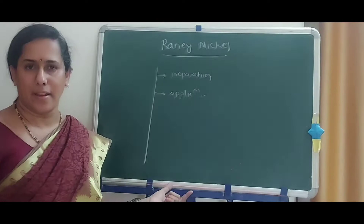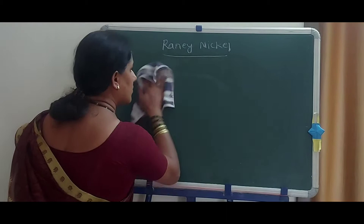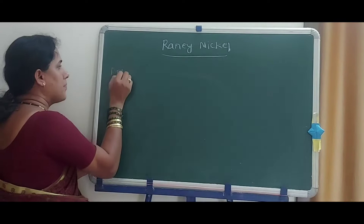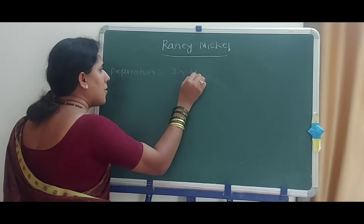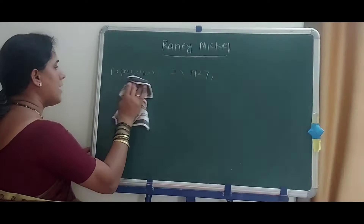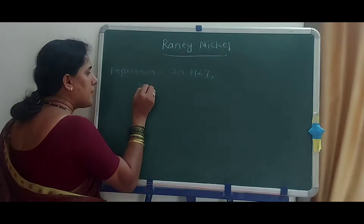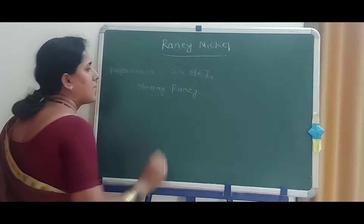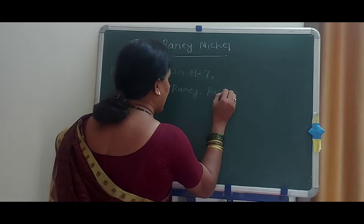So let us start this lecture. First is preparation. In 1927, the scientist Murray Raney discovered this reagent, that is Raney Nickel.